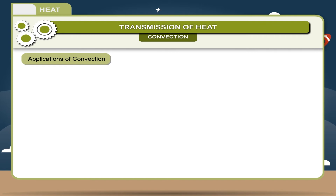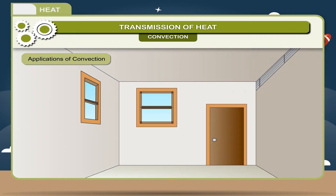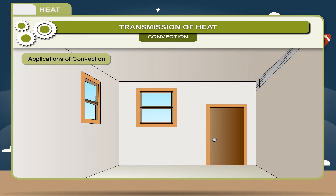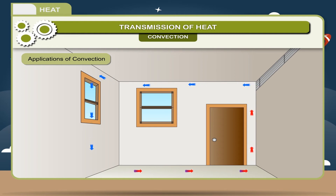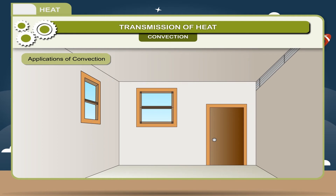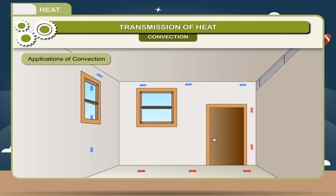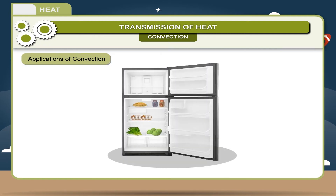Applications of convection: (1) ventilators are provided near the ceilings in rooms. The hot air from our breath is lighter and rises up and goes out from ventilators. The fresh cool air is heavy and comes inside from doors and windows, hence circulation of air is maintained inside the room.